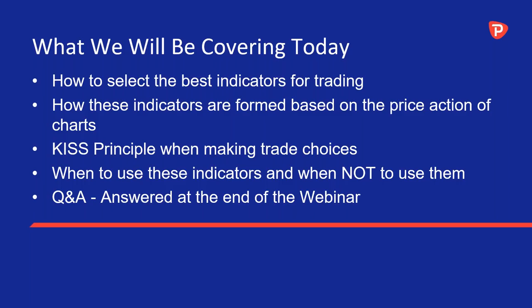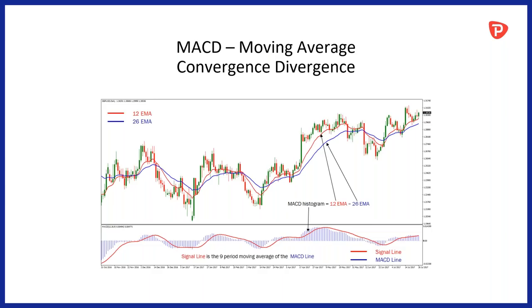We'll also be talking about when to use these indicators and when not to use them — a lot of people use stochastic in the wrong way. And as always, Q&As — feel free to ask questions at any point and put them in the chat room. So let's get stuck into one of our first and favourite indicators: MACD, Moving Average Convergence Divergence. I'll let Tyrone take this one.